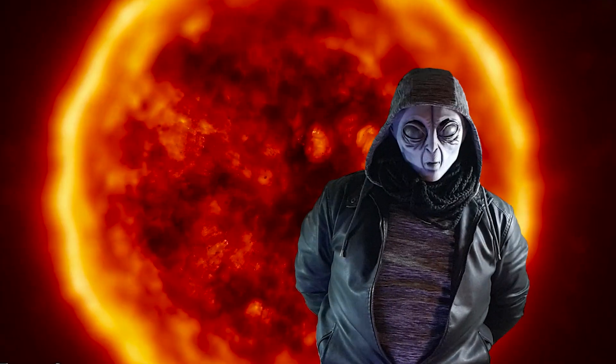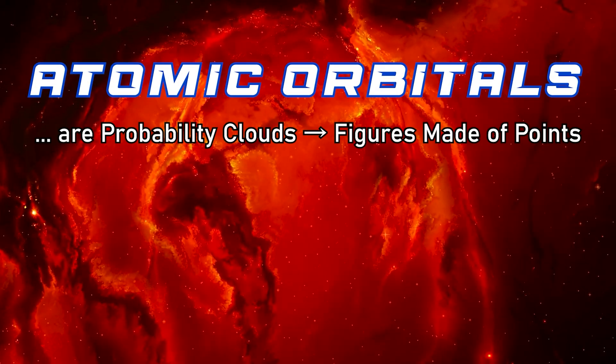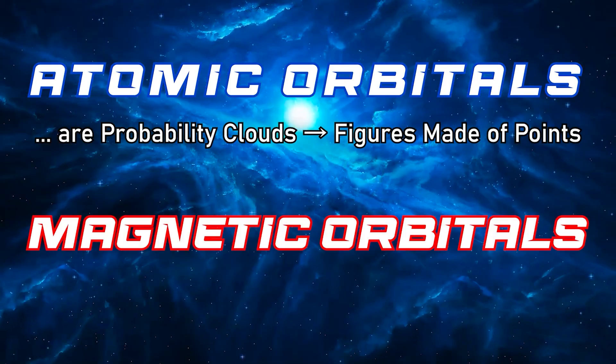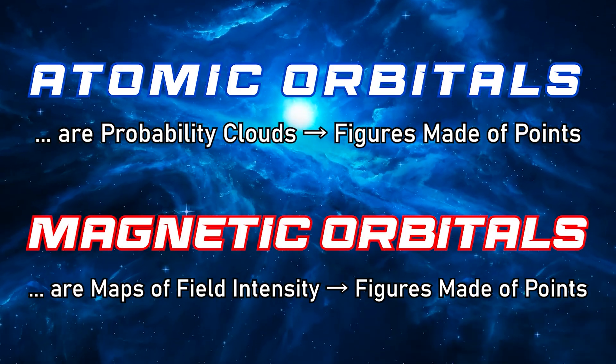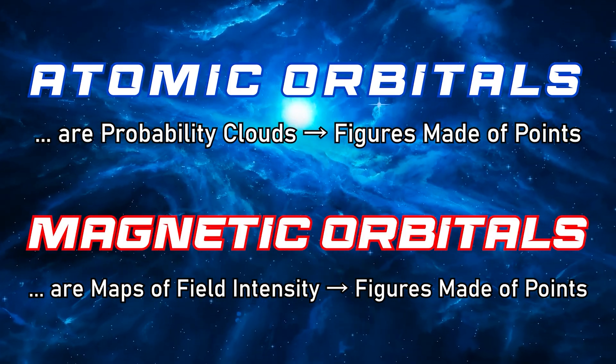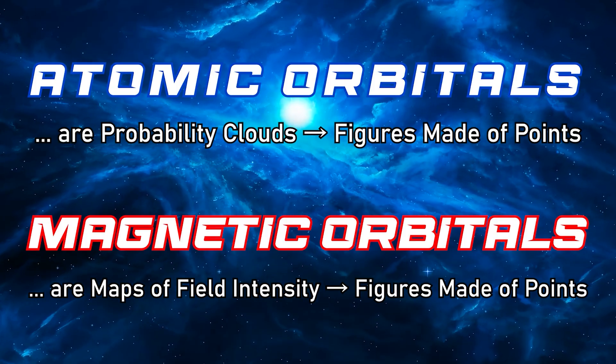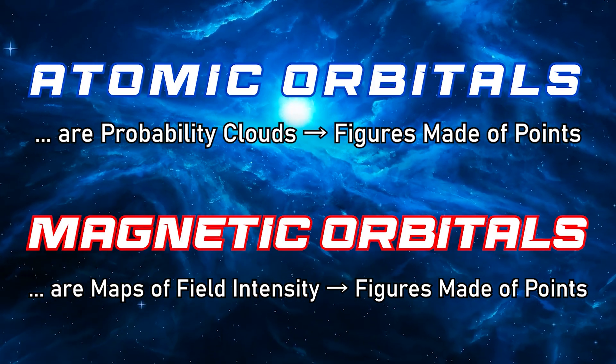So the parallel works like this. Atomic orbitals are probability clouds, figures made of points. Magnetic orbitals are maps of field intensity, figures made of points. In both cases, what we observe is the hidden order in space made visible by a measurement procedure, and that is nothing new in science. Every major advance has followed the invention of a new instrument or measurement method.